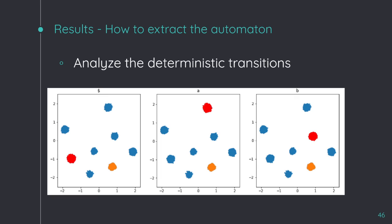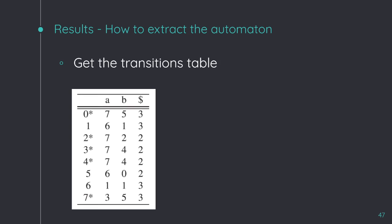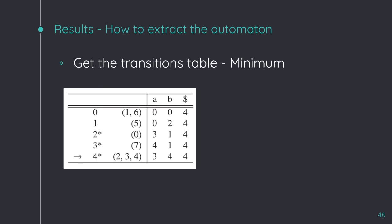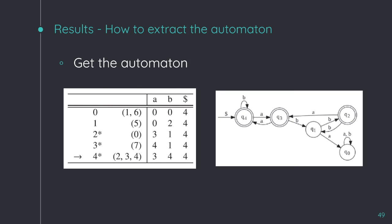So, if we do the same for all the clusters, we can generate a transition table. Then, we just need to minimize this transition table, and finally, we can get the minimum deterministic finite automaton.